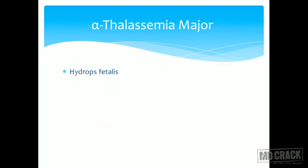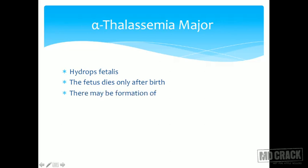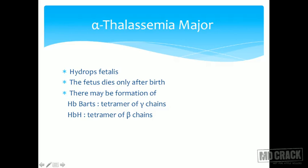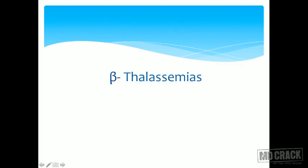Alpha thalassemia major, also called Bart's hydrops fetalis, is fatal — the fetus dies shortly after birth because until birth other genes like zeta handle oxygen transport. Without alpha chains, gamma chains predominate and form hemoglobin Bart's, a tetramer of gamma chains. HbH is a tetramer of beta chains — either HbH or Hb Bart's can be formed.